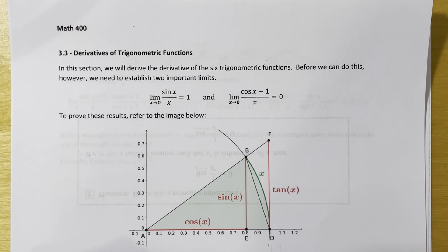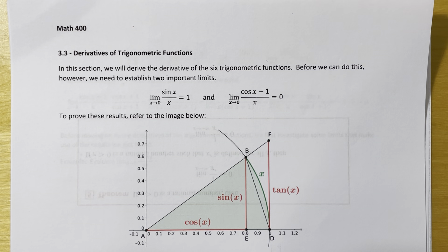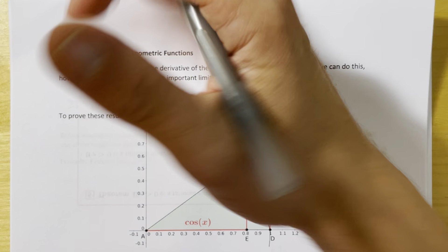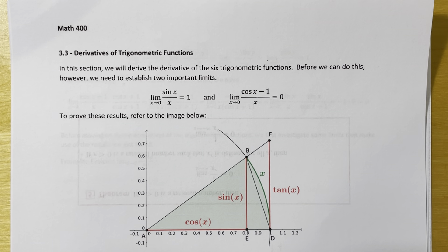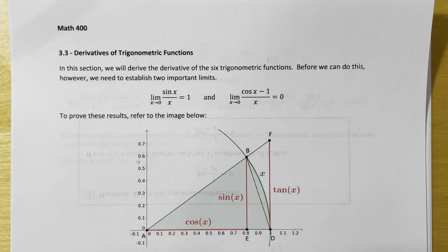We're starting section 3.3 now, and we're working on deriving the derivatives of our six trigonometric functions: sine, cosine, tangent, secant, cosecant, and cotangent. Our approach is to first find the derivatives of the sine and cosine functions, and then since the other four trigonometric functions can all be represented in terms of sines and cosines, we can use those results to find the other derivatives.